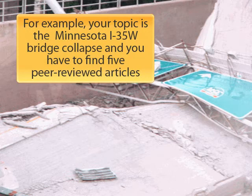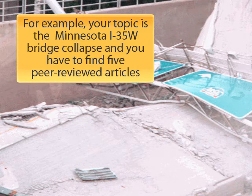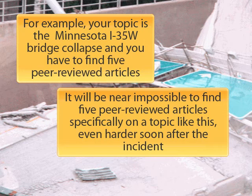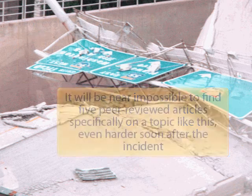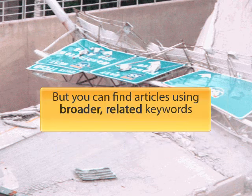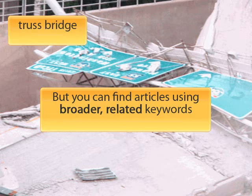For example, if your topic is the Minnesota I-35 West bridge collapse and you have to find five peer-reviewed articles, it will be near impossible to find five peer-reviewed articles specifically on a topic like this, even harder soon after the incident. But you can find articles using broader, related keywords.